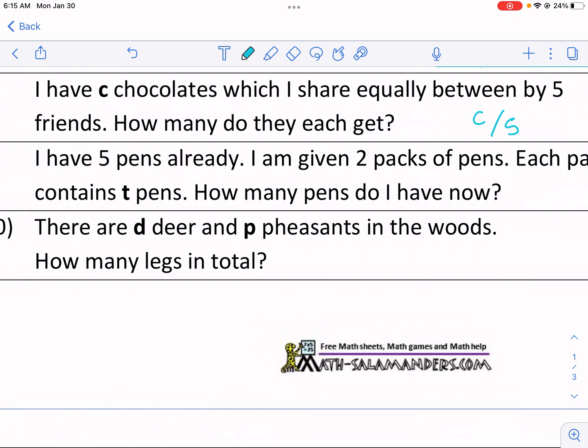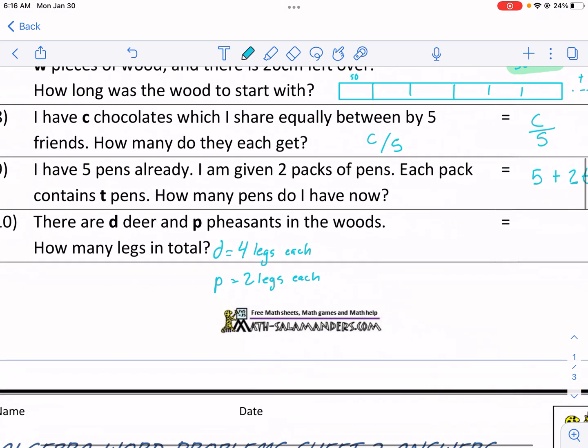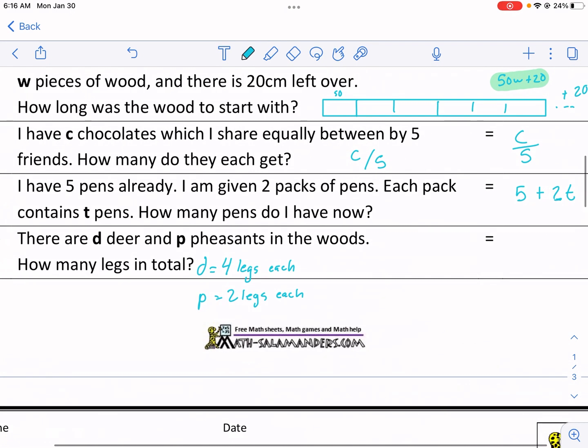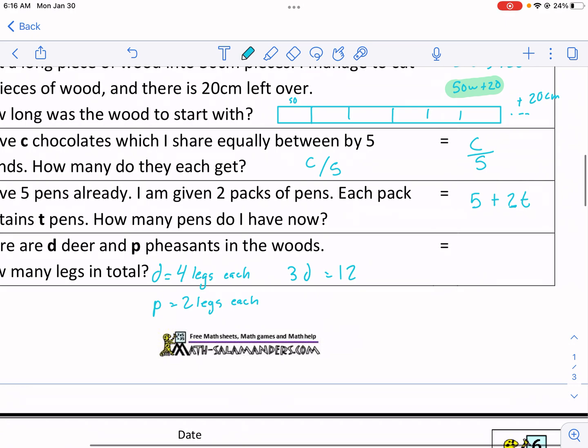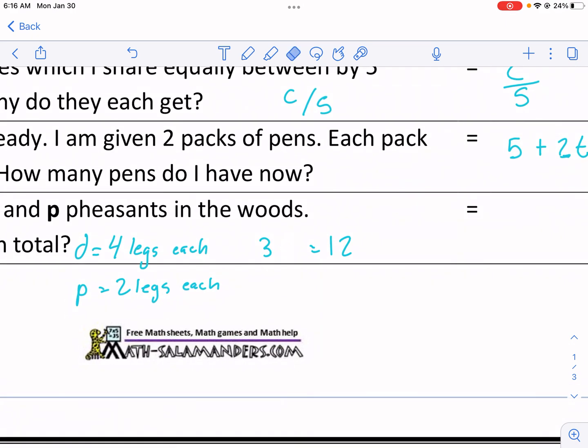And that's a D. And then we have pheasants. And they have two legs each. But we don't know how many deer there are. But we do know, like for example, if we had three deer, that'd be 12 legs. Because we do three times four. But if we know, sorry, it's not three times D. That'd be three times the legs, which are four. Those are legs. And if we had three pheasants, let's make it five pheasants, we'd do five times the number of legs. And that would be ten. So we'd have ten legs. So three times four, twelve. Five times two, ten.